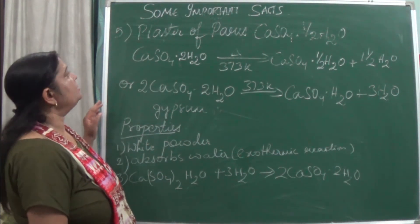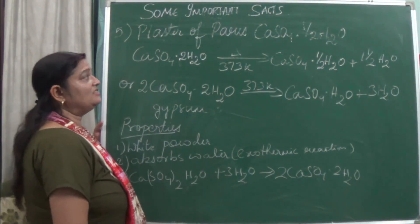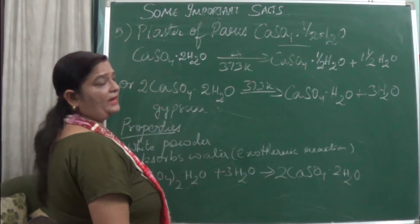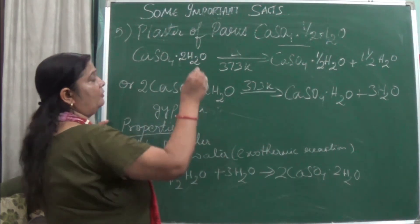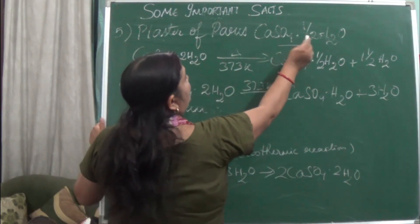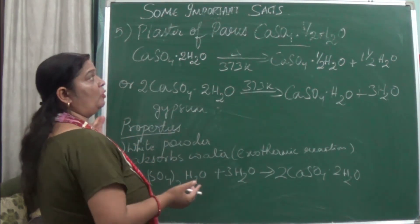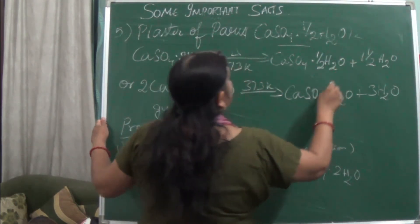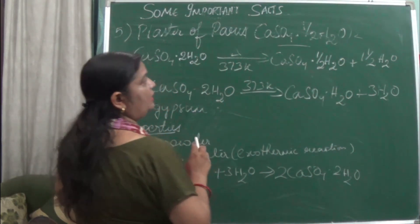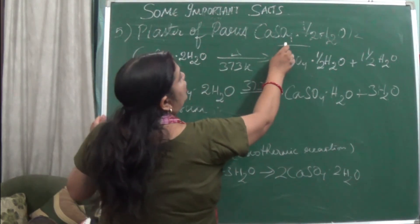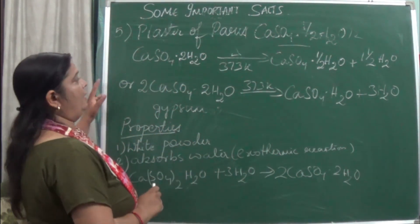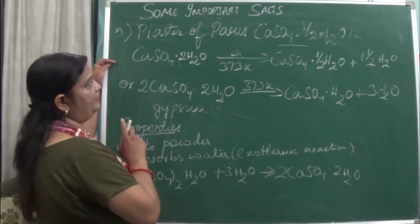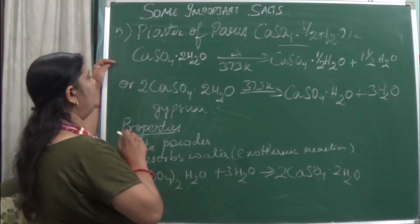The next salt is calcium sulfate hemihydrate — plaster of Paris — with formula CaSO4·½H2O. To avoid the fraction, multiply by 2 to get 2CaSO4·H2O.